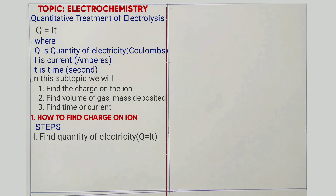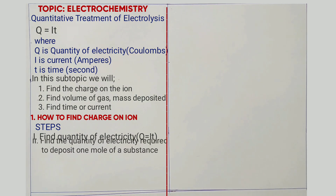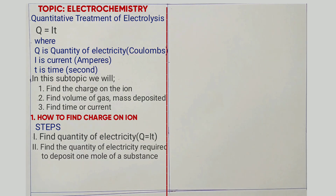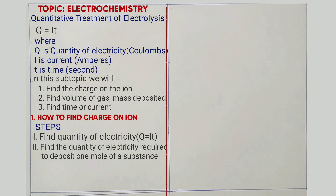Now step two: you are required to find the quantity of electricity for one mole. You take the mass deposited, set it equal to the quantity found in step one, then consider the relative atomic mass of the element being deposited. If you multiply by that, you will get the quantity of electricity required to deposit one mole of that substance.